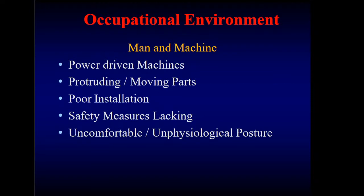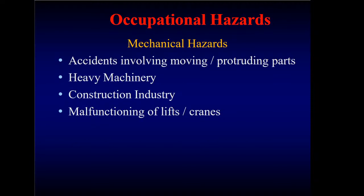Man and machine refers to power-driven machines which can result in problems from protruding or moving parts, poor installation, lack of safety measures, or if the person is in an uncomfortable or unphysiological posture. Mechanical hazards like accidents involving moving parts, heavy machinery, construction industry, or malfunctioning of lifts and cranes can all cause occupational hazards.